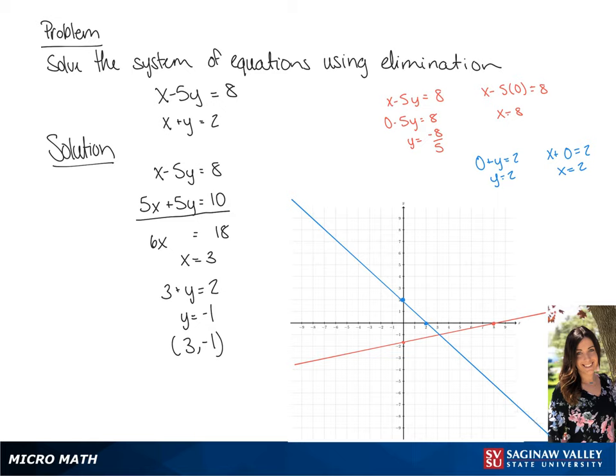And we see that where the two lines cross is at 3, negative 1.